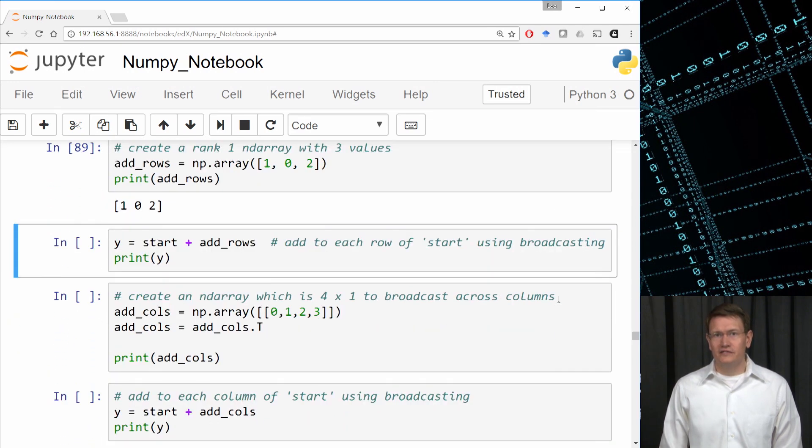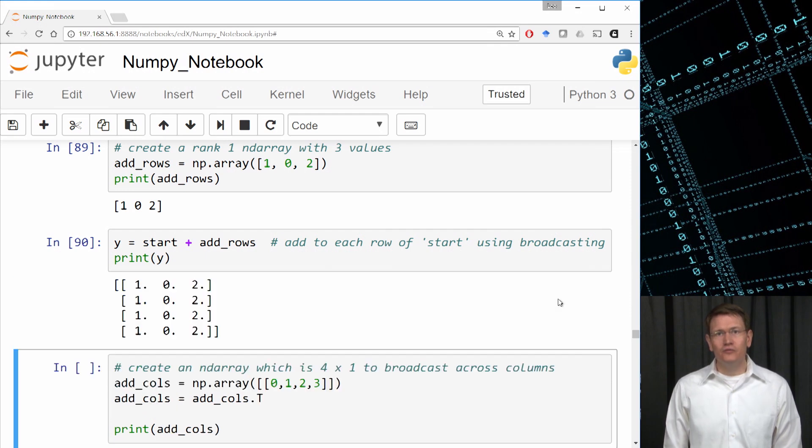And now we'll do the broadcasting. We'll add the 3x1 array to our 4x3 array, and we'll add the array addRows to each row of start. Because start was prefilled with all zeros, each row of start now contains the values in addRows.